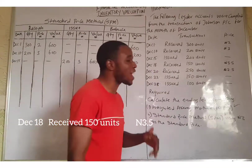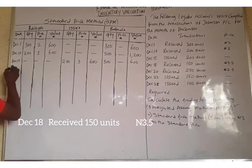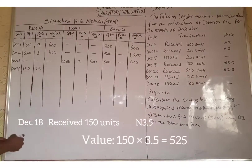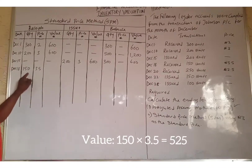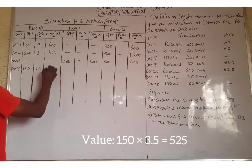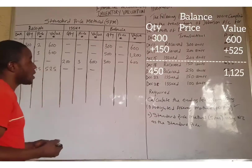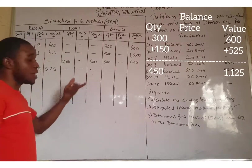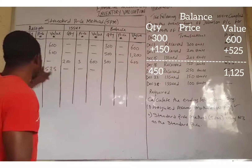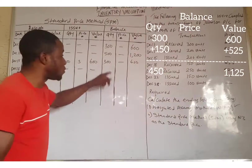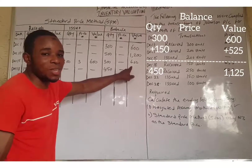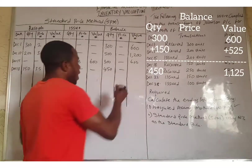The next transaction is December 18. They received an additional 150 units at a price of ₦3.50. 150 multiplied by 3.5 equals ₦525. There is no issue on that day. The balance increases: 150 plus 300 units equals 450 units, and ₦525 plus ₦600 equals ₦1,125.